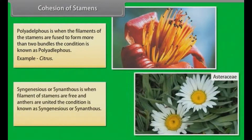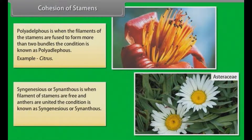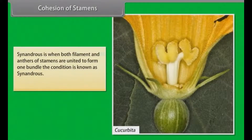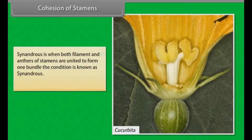Syngenesious or Synantherous is when filaments of stamens are free and anthers are united; example, Asteraceae. Synandrous is when both filaments and anthers of stamens are united to form one bundle; example, Cucurbita.